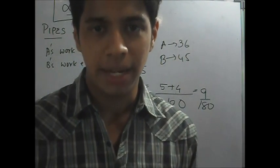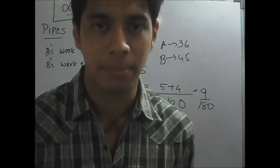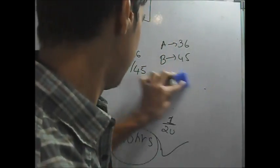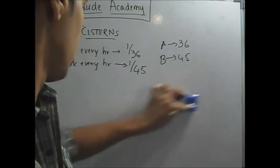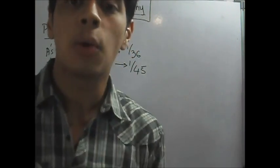Okay. Now, a simple modification can be done. If you have, suppose, B as an outlet pipe. Then how do you proceed? Alright. Now, they've given to you that B is an outlet pipe.